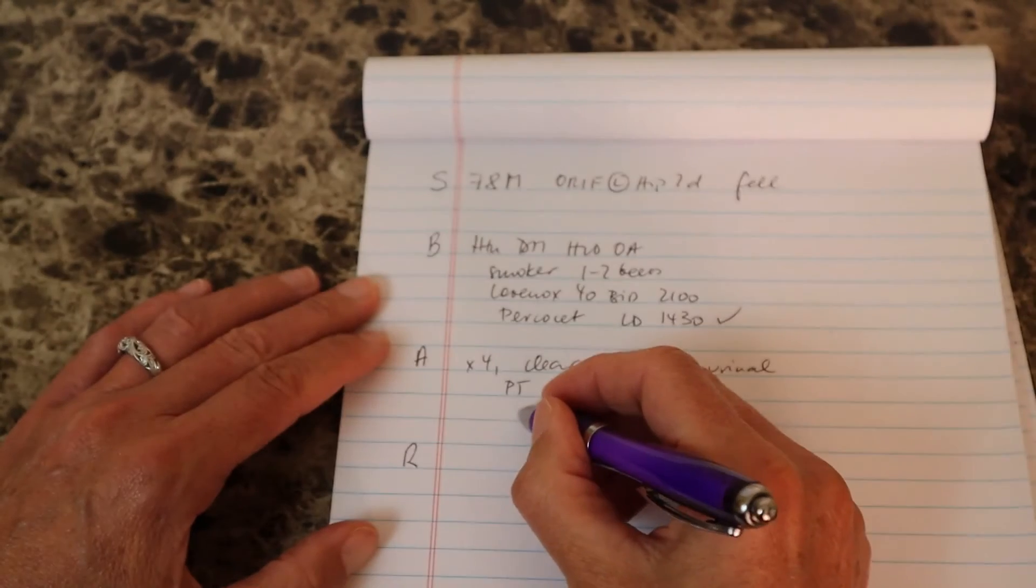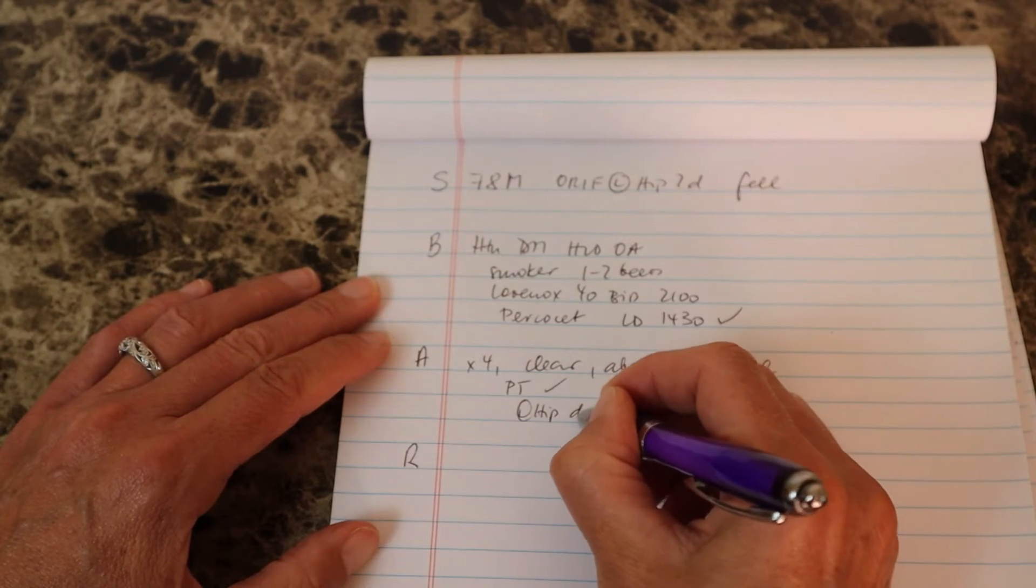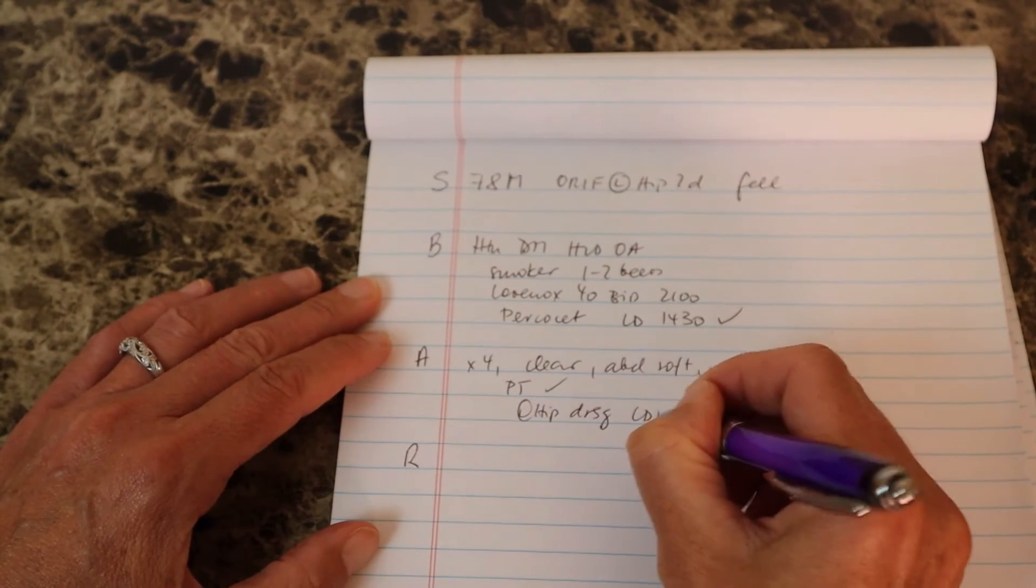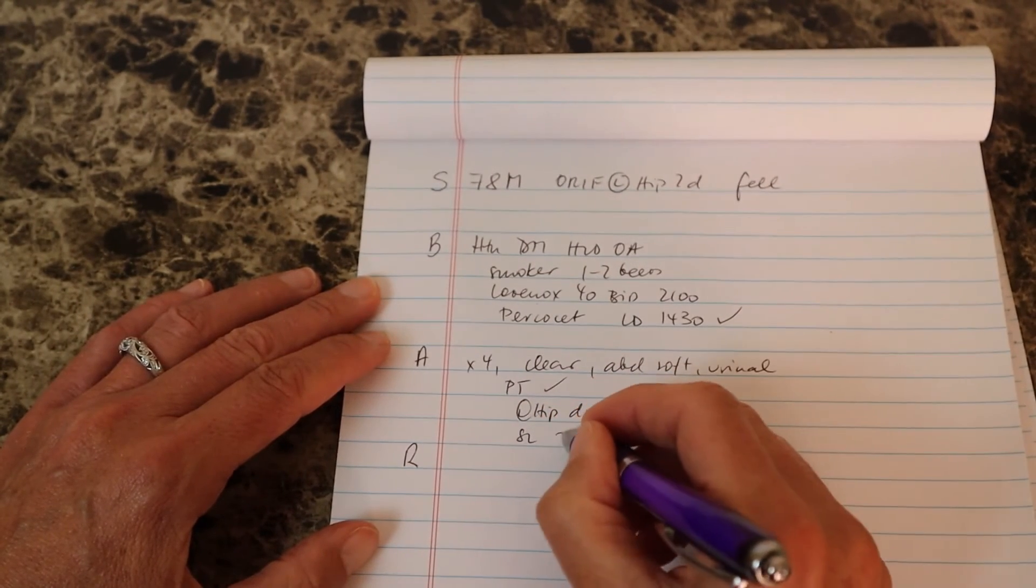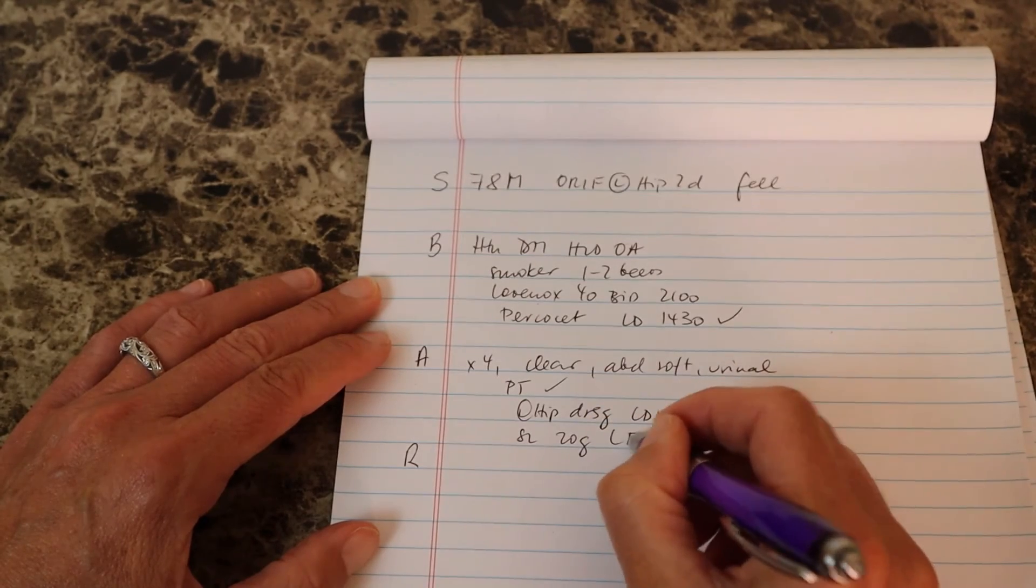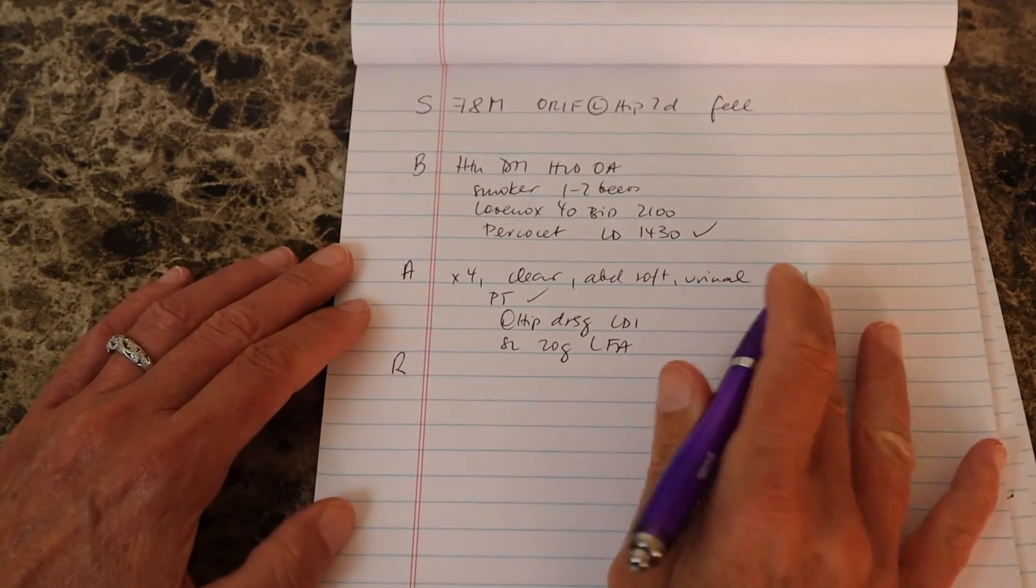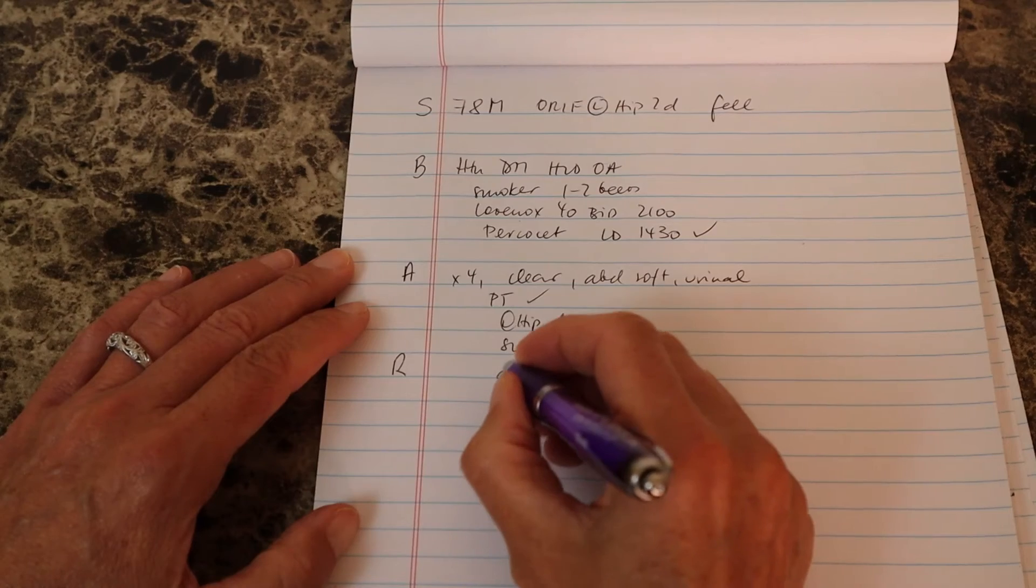Surgical site to the left hip has a dressing. It's clean, dry and intact. He has an IV saline lock to the left forearm, 20 gauge. That looks good. He's on a diabetic diet and like I said he's been eating well.